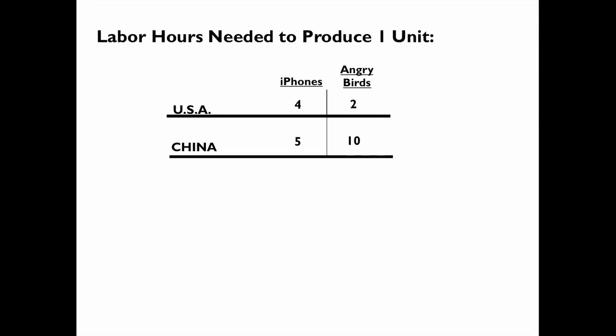Let's go over the solution and how to get those numbers. The first thing you need to do is to calculate the opportunity cost of producing each good for each country. Let's begin with the US.